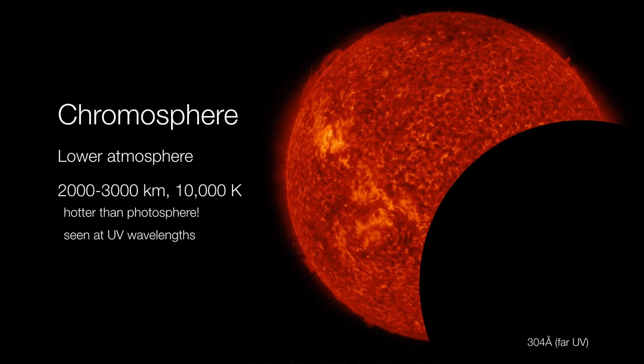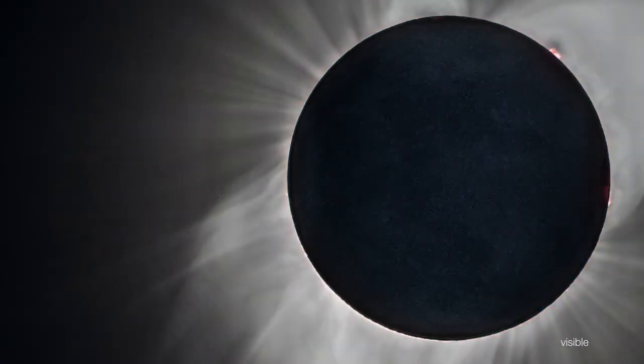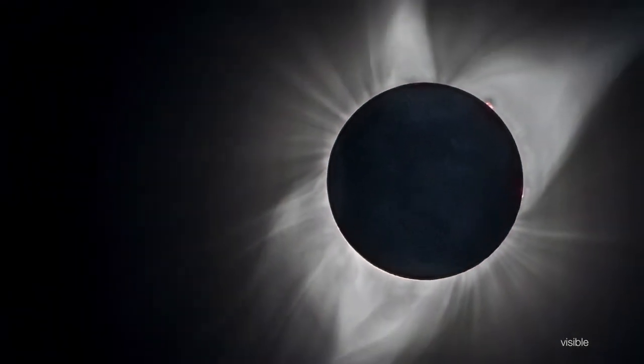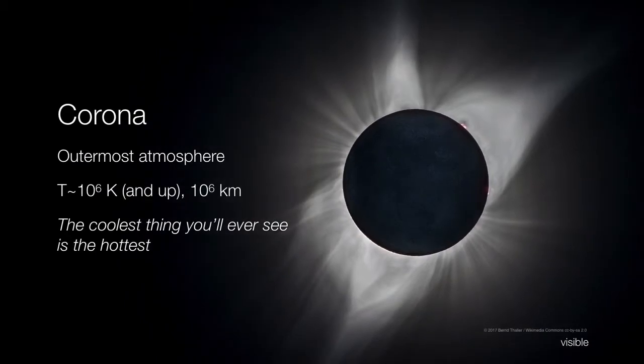However, if you're lucky enough to experience a total solar eclipse, you will find yourself gazing at the entire outer atmosphere of the Sun. This is called the corona. And here, temperatures skyrocket, up to as much as a million Kelvin, and even hotter. So as I like to say, if you get to see a total solar eclipse, you will see the Sun's corona. But the coolest thing that you'll ever see is also going to be the hottest thing you'll ever see.